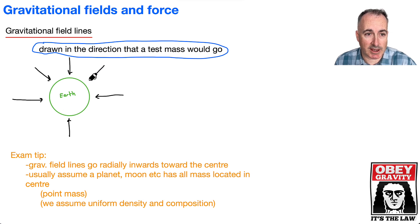That's why in this exam tip I say that we draw them going radially inwards towards the center. Usually we're going to be assuming that the planet or the moon or whatever has all the mass located in the center, so we're going to assume it's kind of like a point mass. We're also going to be assuming things like uniform density and composition to make our lives a little bit easier.